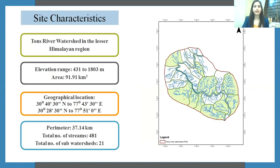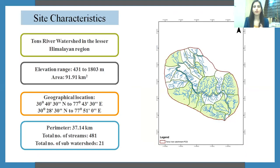The basic site characteristics are: elevation ranges from 431 to 1,803 meters, and the area is 91.91 square kilometers. The total number of streams is 481, consisting of seasonal and perennial streams. There are 21 subwatersheds within this watershed.